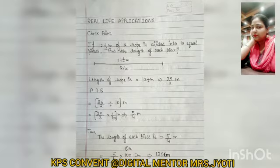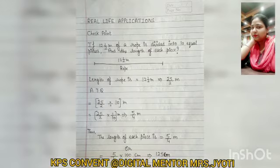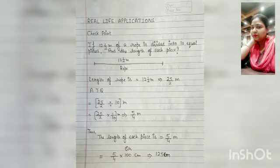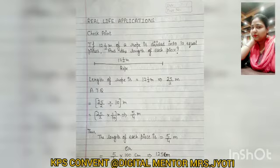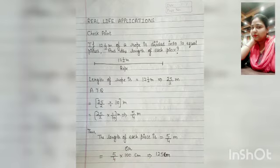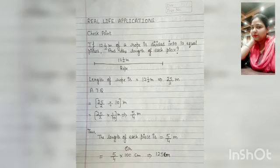According to the question, 25 by 2 is divided by 10. Now we get 5 upon 4 meters. So the length of each piece is 5 upon 4 meters, or we can convert this into centimeters — that gives us 125 centimeters.